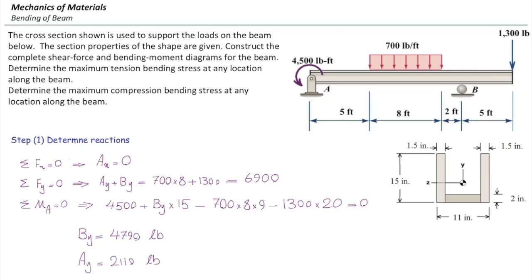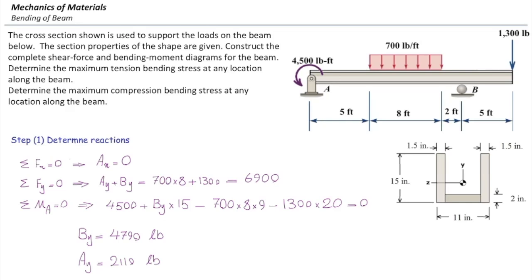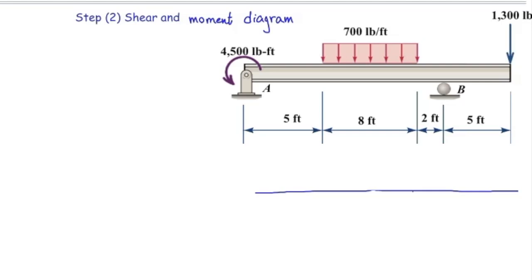So we have determined the reaction force. Now we are ready to go and determine the shear diagram. For the shear diagram, I'm going to start from the left end. What is the initial value of shear at left end? Is there an initial value?